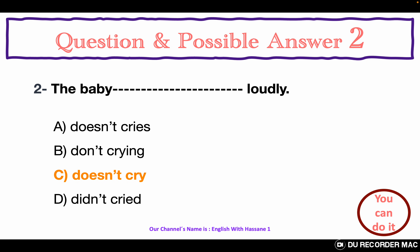Question and possible answer 2. All the questions of this grammar test are in the present simple negative. Choose the best answer A, B, C, or D. The baby ___ loudly. A. Doesn't cries. B. Don't crying. C. Doesn't cry. D. Didn't cried. The correct answer for this question is the letter C. Doesn't cry.